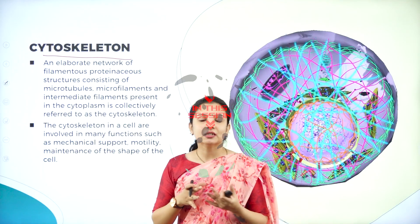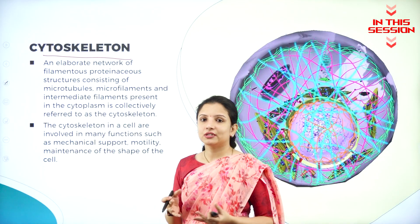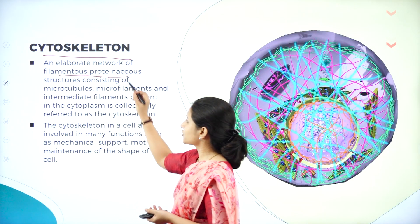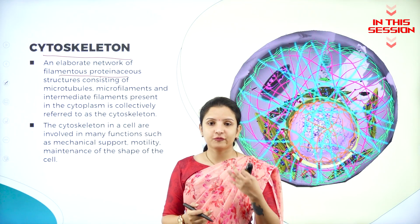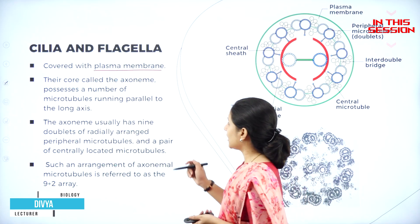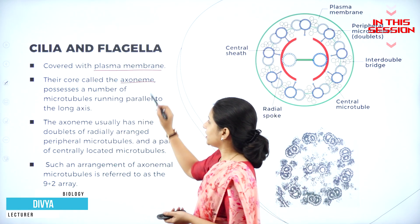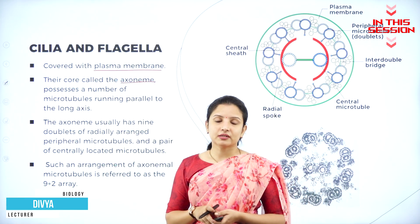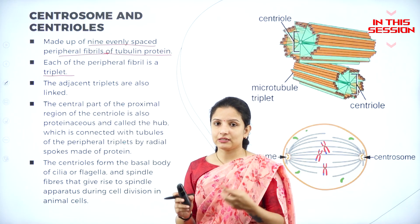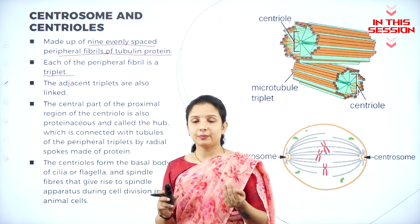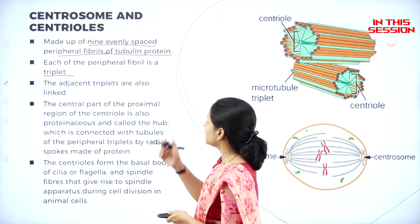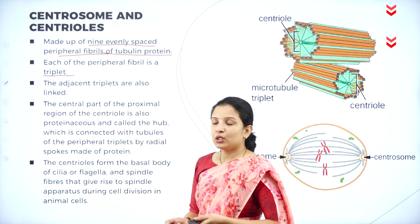The cytoskeleton is a continuous network of filamentous structures which are made up of protein. The central part of the cilia and the flagella are called the axoneme. These axonemes are proteinaceous structures arranged in triplets at the periphery, and they are mainly made up of tubulin proteins.